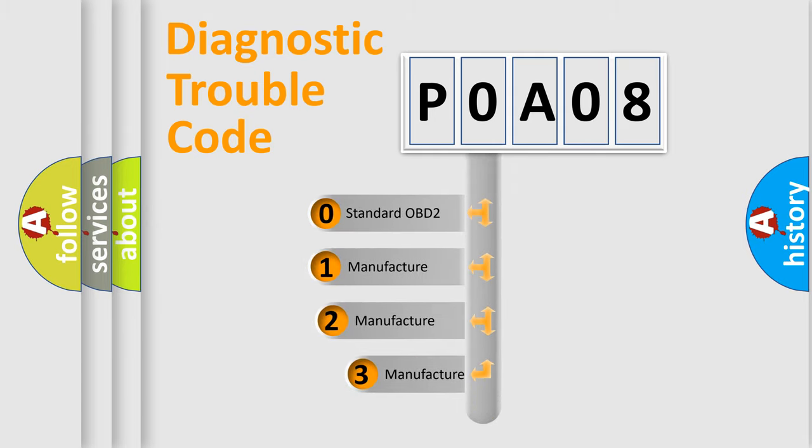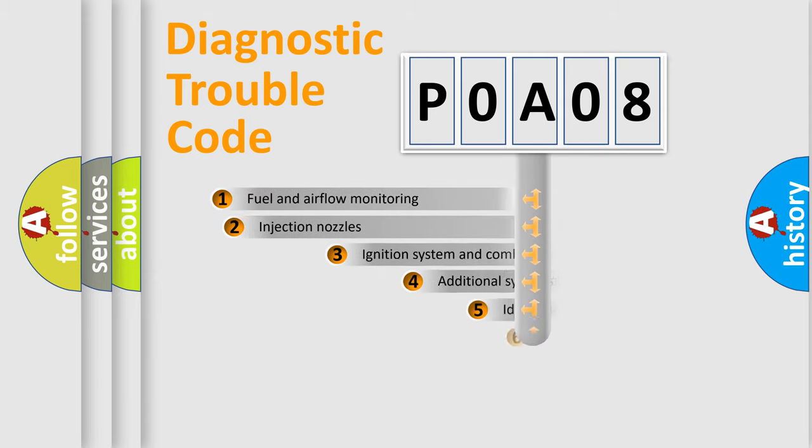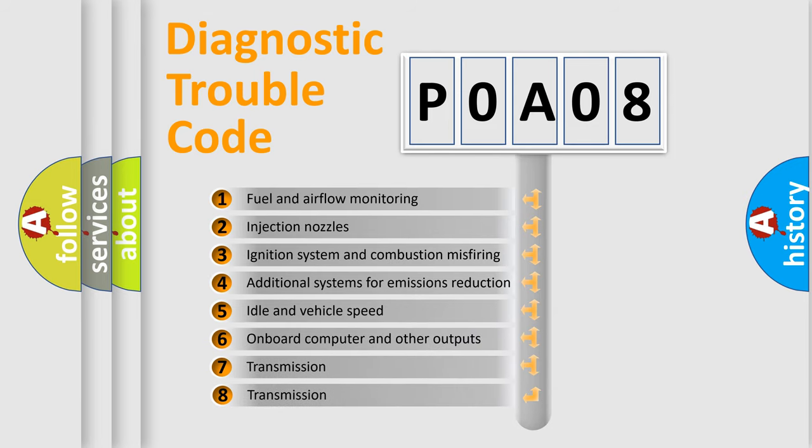If the second character is expressed as zero, it is a standardized error. In the case of numbers 1, 2, or 3, it is a manufacturer-specific expression of the car-specific error. The third character specifies a subset of errors.